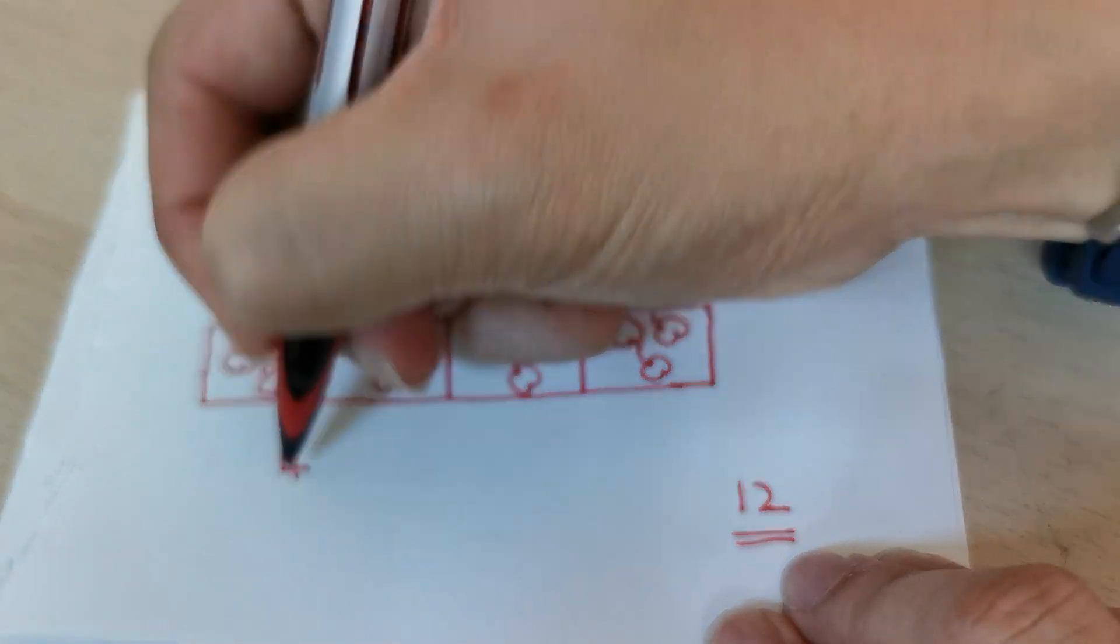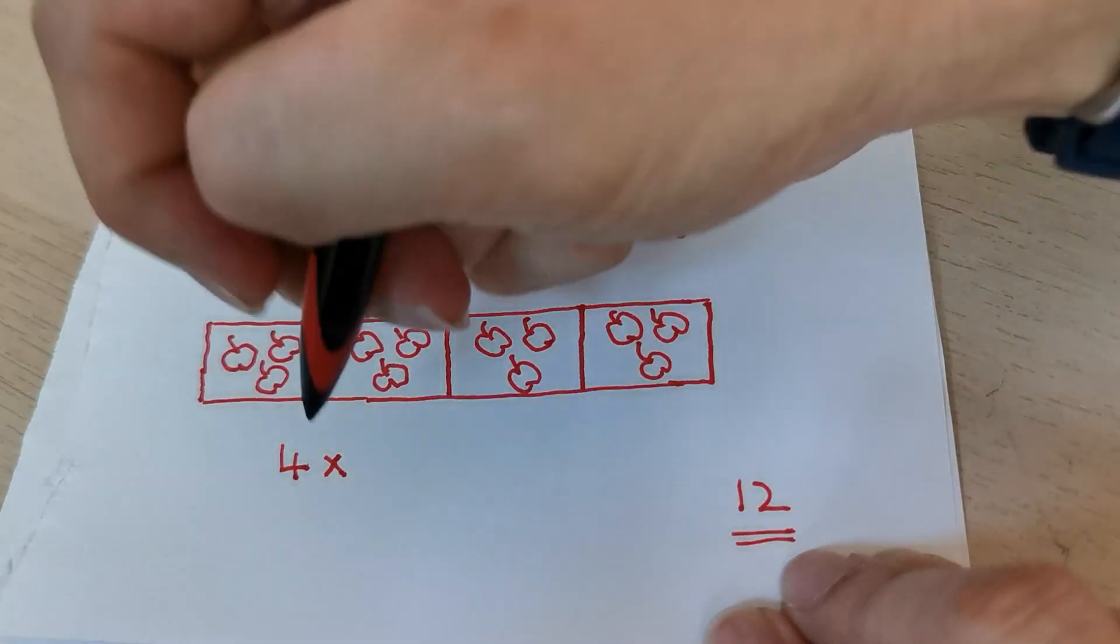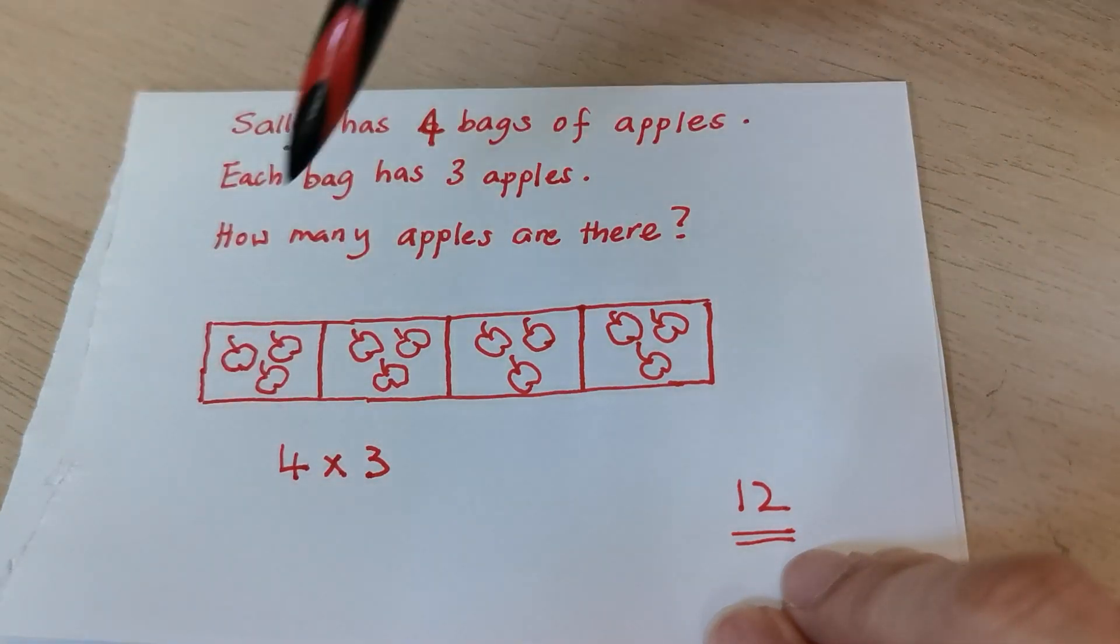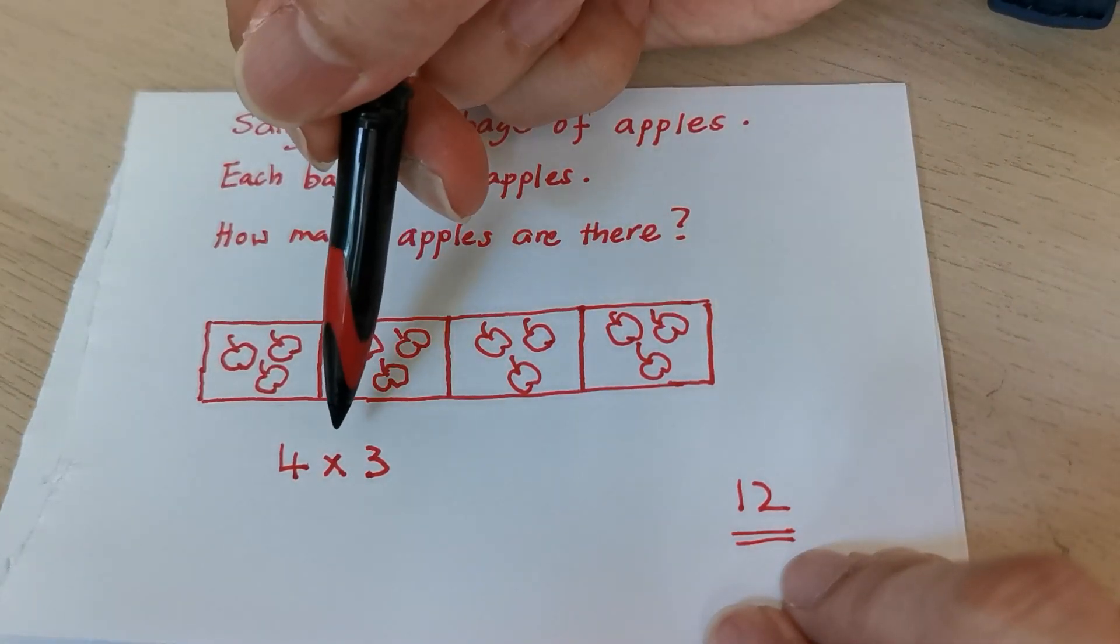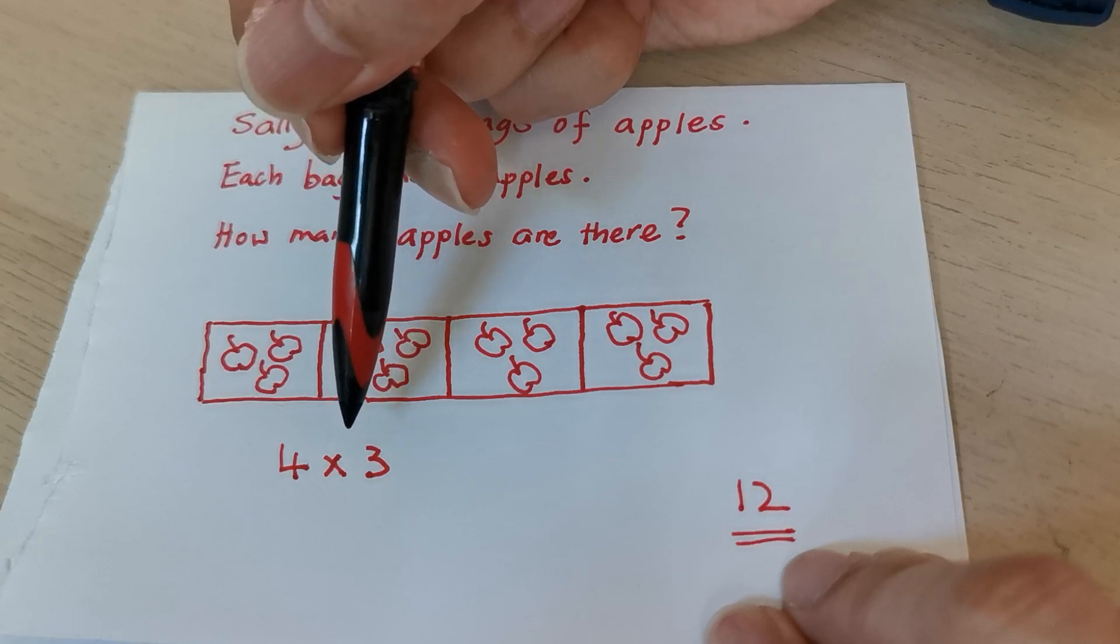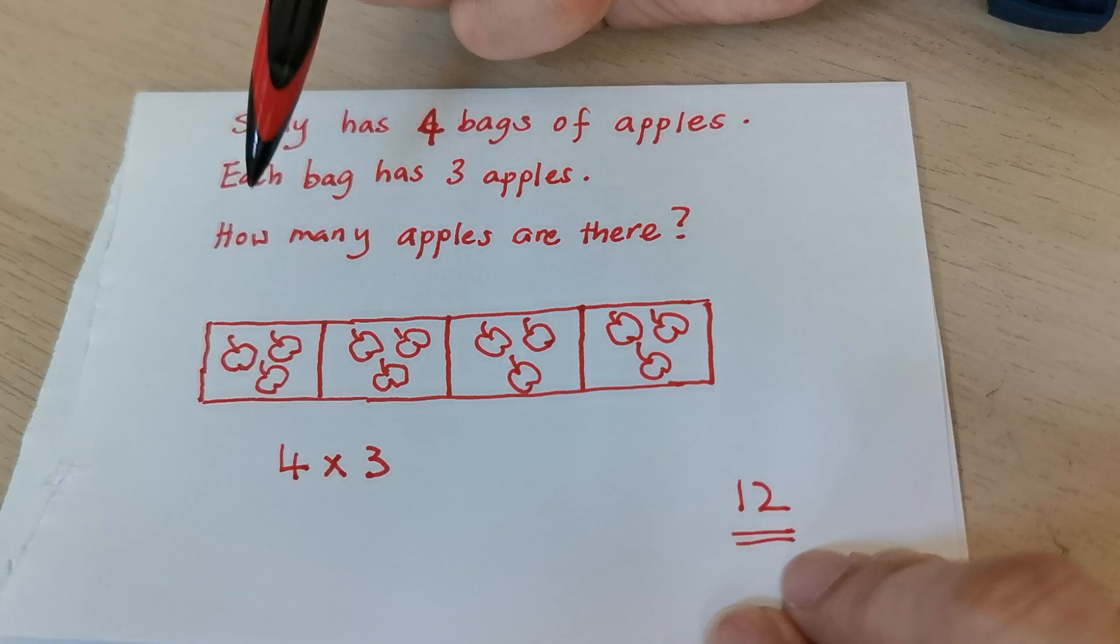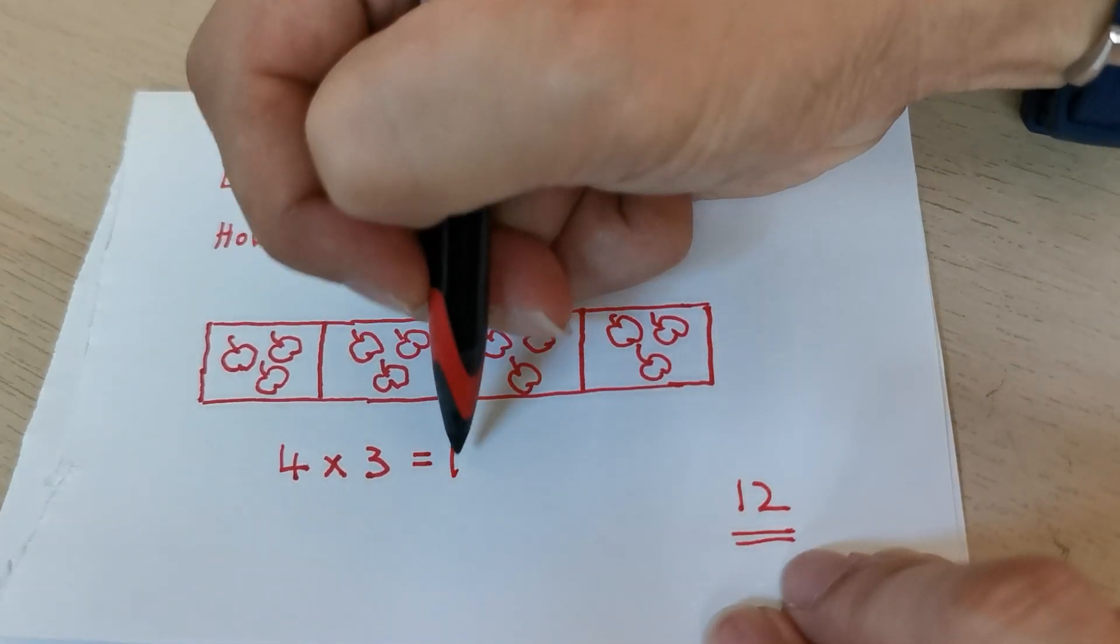So write down four. Each bag has how many? Three. So you say, teacher Patrick, why must I multiply? Remember, when you are finding the total, you need to multiply. When you want to find one bag, like the previous question, of course, you need to divide. So four times three equals to twelve.